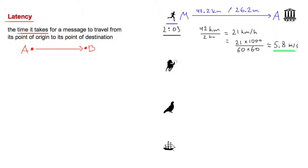We could also recruit some help to deliver the message. The speed of a very fast horse is about 85 kilometers per hour. If we repeat the same calculation as before, that works out to be about 24 meters per second — the speed with which the message will travel. That is more than four times faster than our messenger on foot.